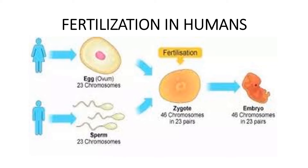Fertilization in humans. Fertilization, as you already know, is the moment in which a male sex cell — a sperm — unites with a female sex cell, the ovule. As a result of their union, a zygote is formed in the womb of the female. The division and growth of the zygote leads to the birth of a new individual.